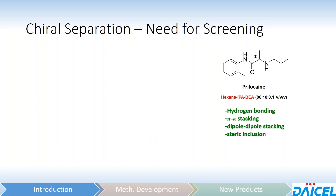One more example is prilocaine. Prilocaine is a chiral molecule — it is slightly basic. So if we were to screen this on normal phase conditions — hexane/IPA with DEA in the mobile phase — you've got four possible interactions that can take place.